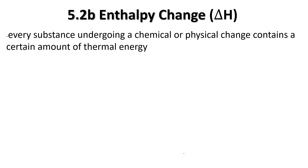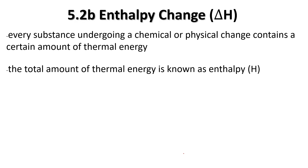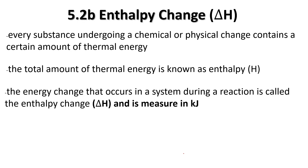In this video we're going to take a look at enthalpy change. Every substance undergoing a chemical or physical change — so that would be a change of state — contains a certain amount of thermal energy. Going from a solid to a liquid or to a gas requires energy, and those processes can be exothermic or endothermic. The total amount of thermal energy is known as enthalpy, represented by the letter H. The energy that occurs in a system during a reaction is called the enthalpy change, delta H, and it's measured in kilojoules.